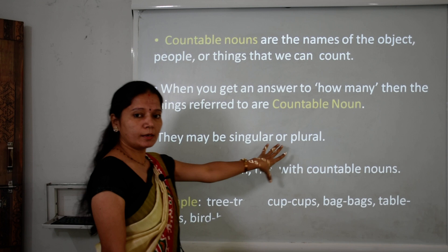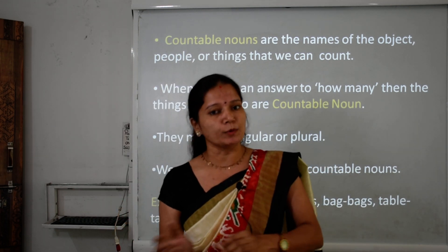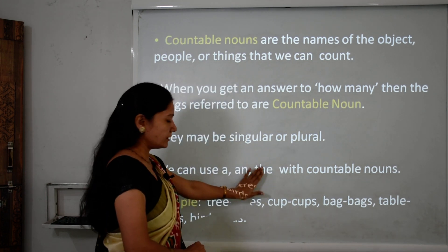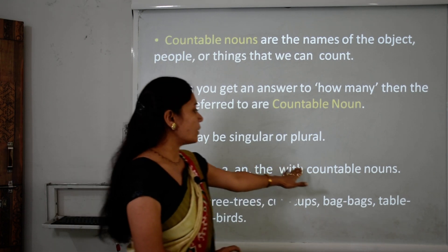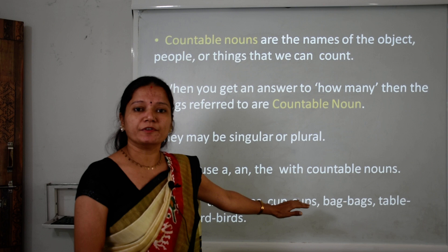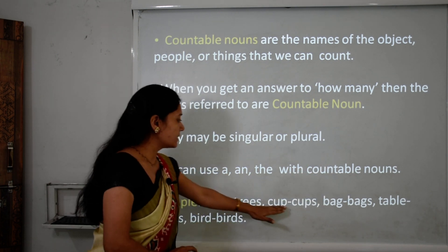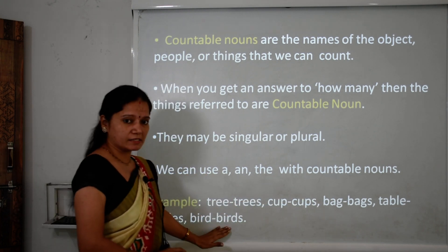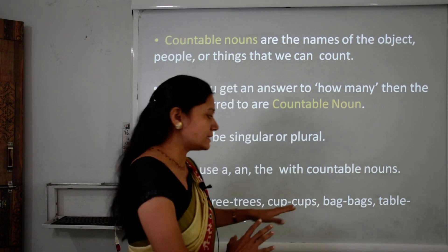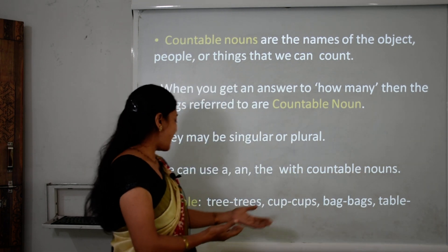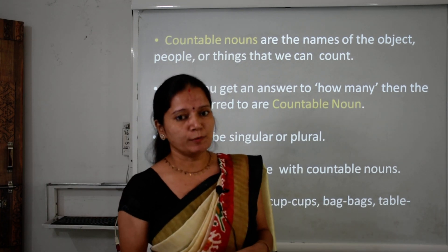Countable nouns may be singular or plural. We can use the articles 'a' and 'the' with countable nouns. Examples of countable nouns are: trees, cups, bags, tables, and birds. We can easily count all of these. So countable nouns are available in both forms — singular and plural.